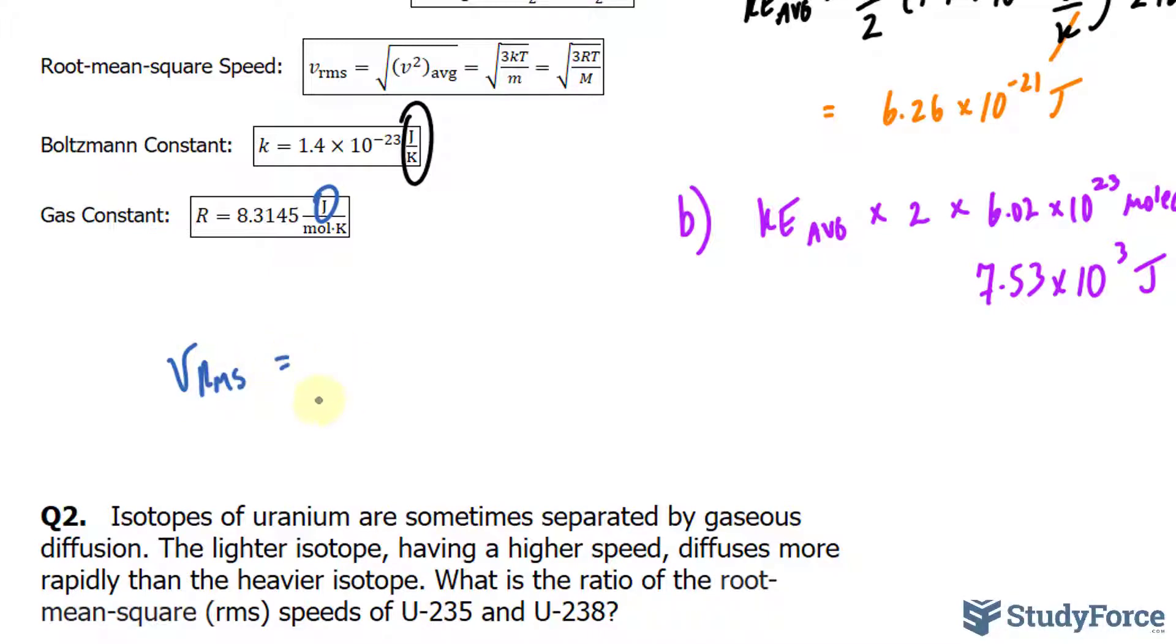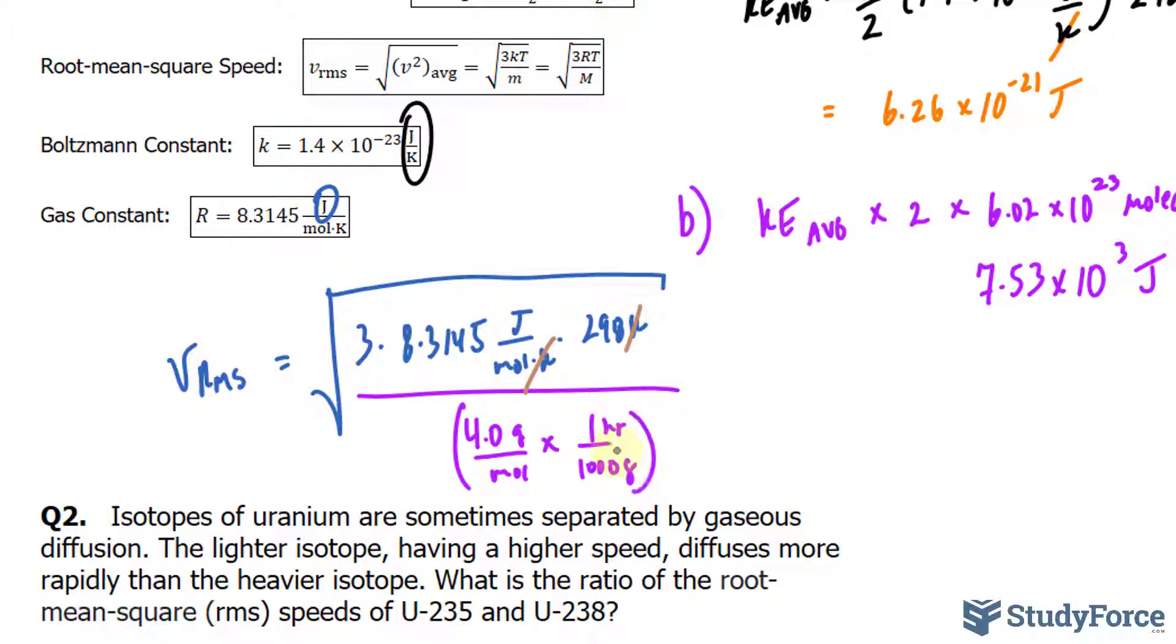Here it goes. So the square root of 3 times the gas constant, 8.3145 joules per mole times Kelvin, times the temperature, which was at 25, and that's 298 Kelvin. The units cancel out or start to cancel out immediately over the molar mass of helium being 4.0 grams per mole, and that needs to be made into kilograms, so we will divide that by 1,000. I put the conversion ratio right into the calculation, but you can do it on the side next time.